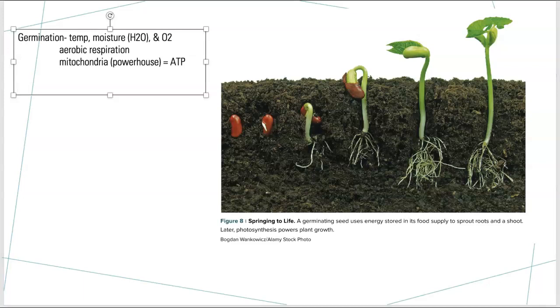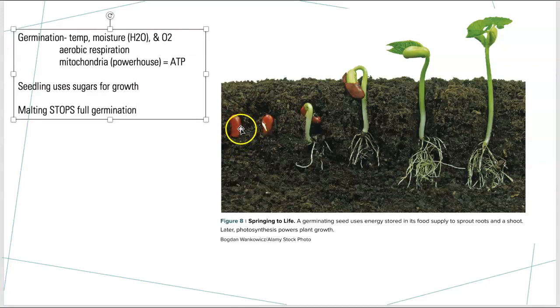So what we're seeing happen here is the seedling. Seedling uses sugars for growth. And what we're doing when we're talking about that malting process is the malting process stops the full germination. The malting process is working with this step, this step here, to get the seed to start to break down the starches, produce the enzymes. But then we want to stop it before it makes this stem, roots, and eventually a leaf. We don't want that when we're making our beer. So it stops full germination.